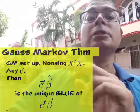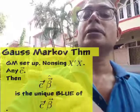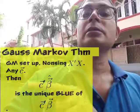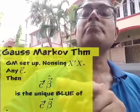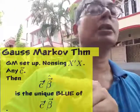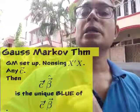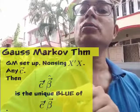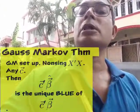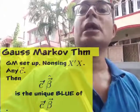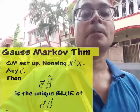If I drop this condition, that will be the general version, then you take any C vector, then C prime beta hat, this linear combination of all the beta i hat, is the unique blue of the corresponding linear parametric function C prime beta.